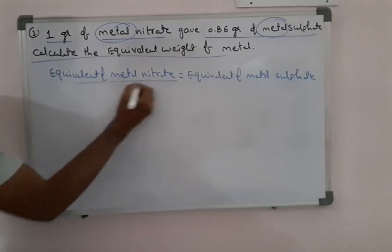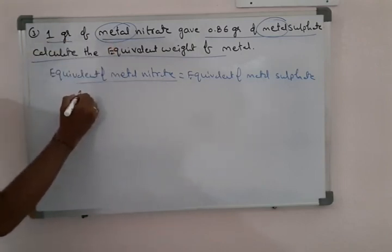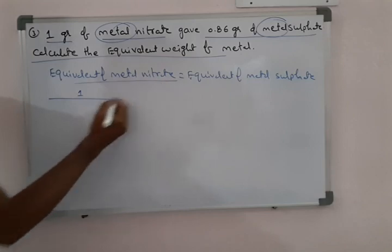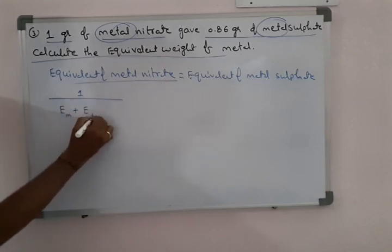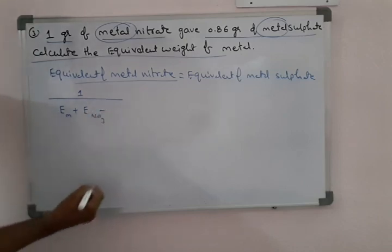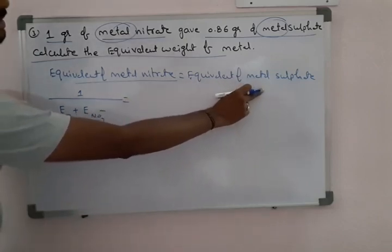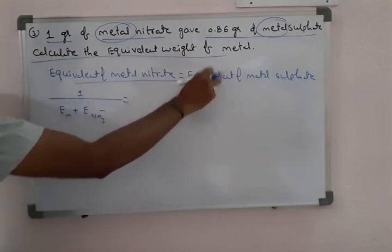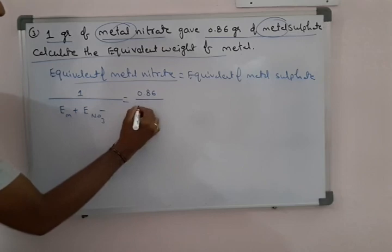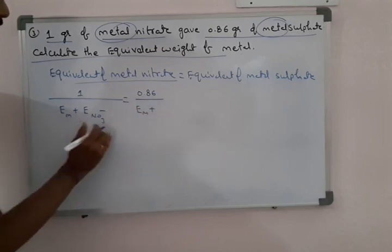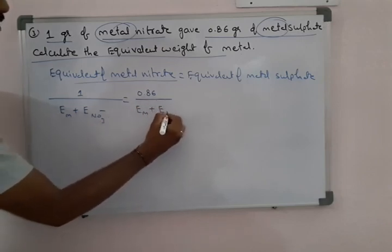Equivalence means weight divided by equivalent weight. The weight of metal nitrate is 1 gram. Equivalent weight of metal nitrate means equivalent weight of metal plus equivalent weight of nitrate. On the other side, equivalent weight of metal sulphate means its weight, which is 0.86 grams, divided by equivalent weight of metal plus equivalent weight of sulphate.